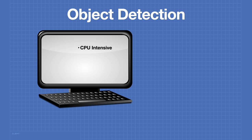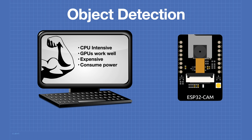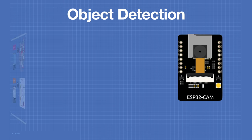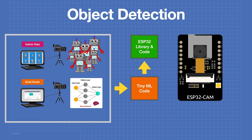Object detection techniques can work quite well but they are very CPU intensive. In many cases GPUs are employed for this sort of work, which can result in expensive equipment that also consumes a lot of power. So how could we possibly do this with an ESP32? We do our data gathering and model building offline on an online service or local machine, then export the results to TinyML code. We can use that TinyML code to build an ESP32 library and some code that we can then run on our ESP32 CAM.